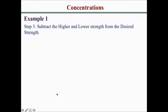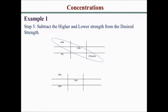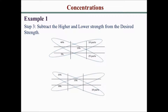You subtract the higher and lower strengths from the desired strength. So 40% minus 15% gives 25 parts. 15 minus 5 equals 10 parts. 25 minus 15 equals 10 parts. And 15 minus 10 equals 5 parts. Note these numbers are absolute values — there are no negative numbers.